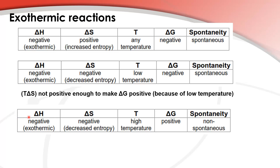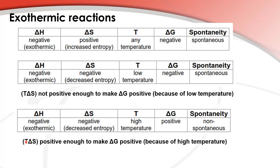Our next set of conditions: negative ΔH, again an exothermic reaction, with negative entropy or decreased entropy, but now at a high temperature. For a high temperature, ΔG will be positive and the reaction will be non-spontaneous, because T times ΔS is positive enough to make ΔG positive due to the high temperature.